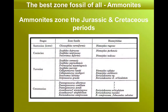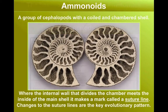Part of this group are the Ammonites. And the Ammonites are superb zone fossils, in particular for the Jurassic and Cretaceous periods. They allow this period of geological time to be subdivided in a really quite accurate and detailed way. This group of cephalopods, called the Ammonoids, all have a distinctive feature: they have a chambered shell. Often that's coiled, but it's those chambers that are key to understanding the evolutionary patterns.